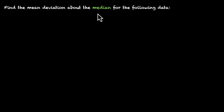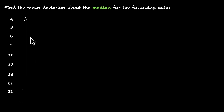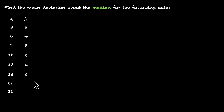Find the mean deviation about the median for the following data. Here is our data set — Xi and the frequencies. The Xi values are 3, 6, 9, 12, 13, 15, 21, and 22. The corresponding frequencies are 3, 4, 5, 2, 4, 5, 4, and 3.